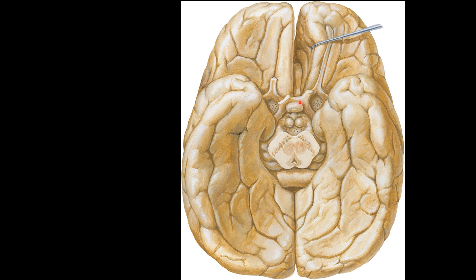From the inferior view, from anterior to posterior: the optic chiasma, behind that the stalk of the pituitary gland, then the infundibulum, then at the midline between the two mammillary bodies you can identify the tuber cinereum, followed by the two mammillary bodies, then the posterior perforated substance, and finally the tegmentum of the midbrain.